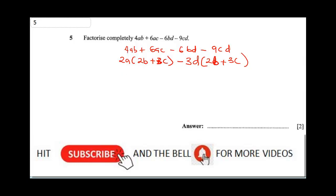So you're going to take one. This will be (2a - 3d)(2b + 3c). So this is our final answer. These are the two factors.